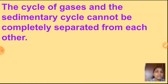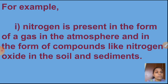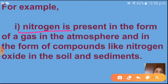For example, nitrogen is present in the form of a gas in the atmosphere — 78% of our atmosphere is nitrogen — and at the same time, nitrogen is present in the form of compounds like nitrogen oxide in the soil and sediments. Both cycles depend on each other.